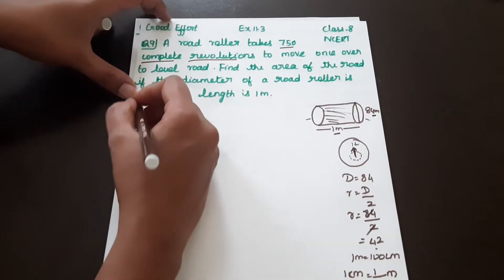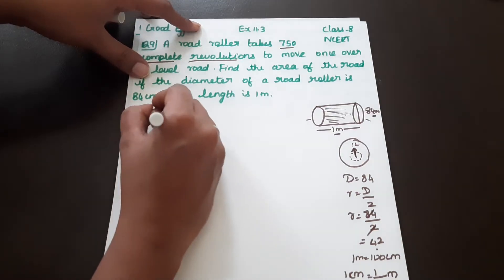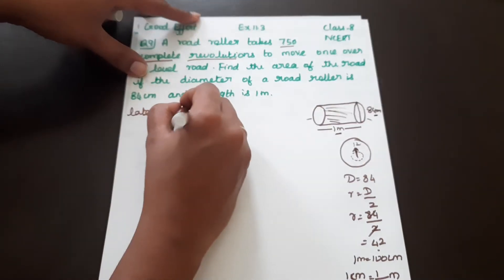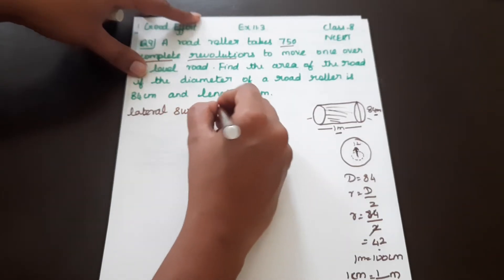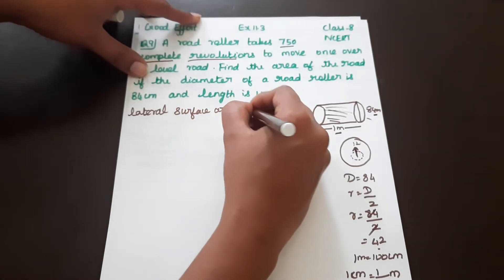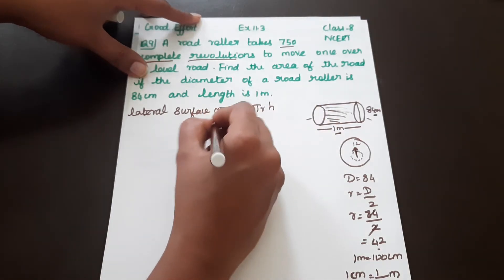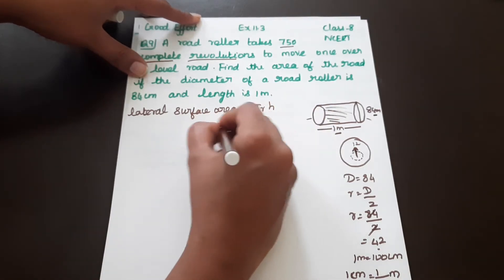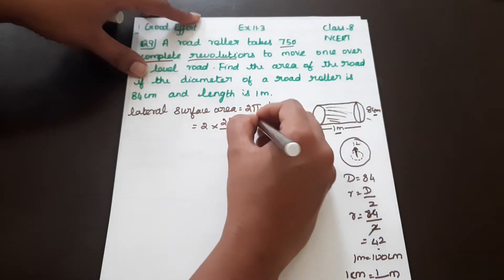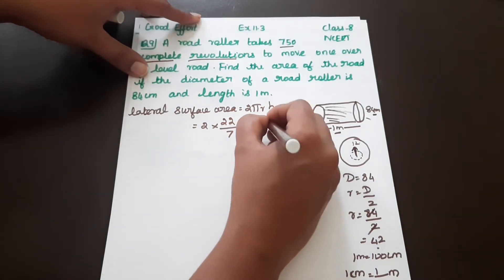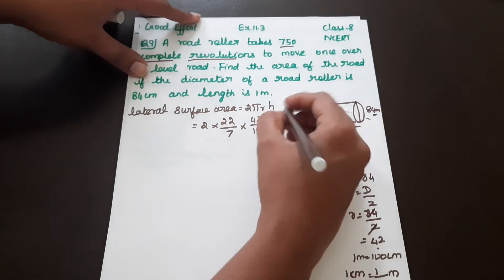Now the lateral surface area formula: lateral surface area equals 2πRH. So we substitute: 2 into 22/7, R is equal to 42/100, and H is equal to 1 meter (the height/length of the road roller).